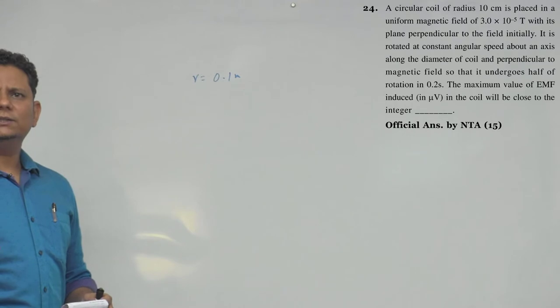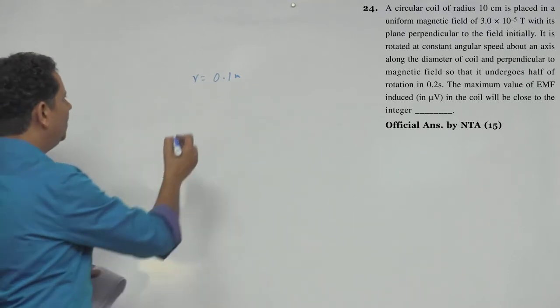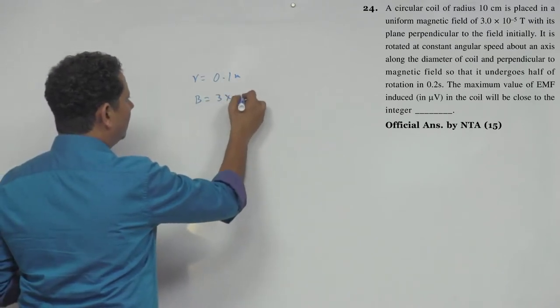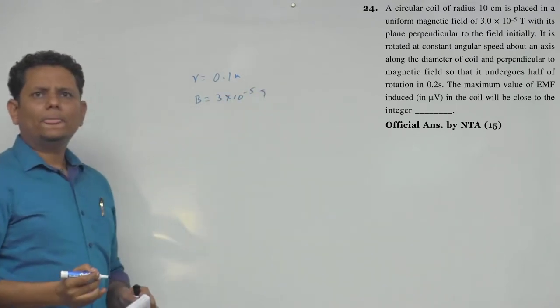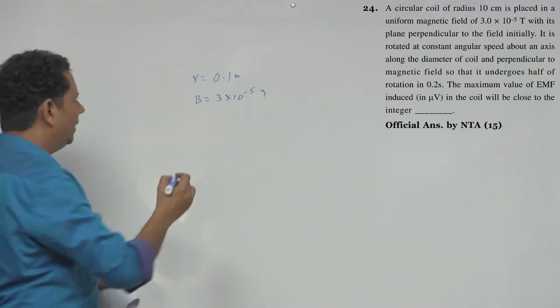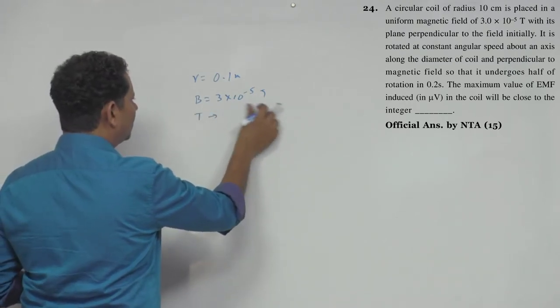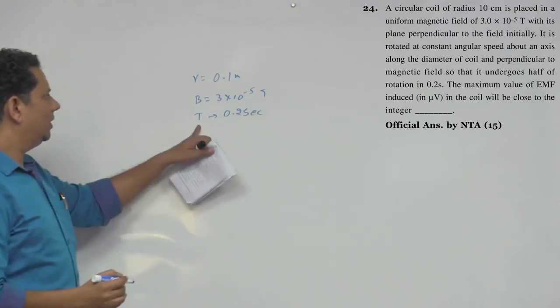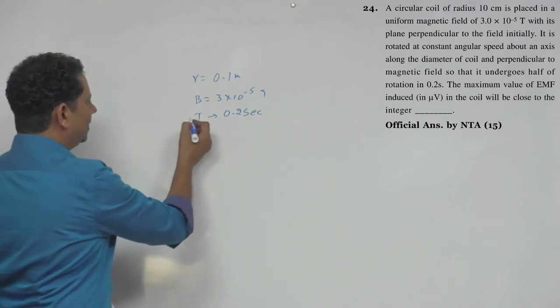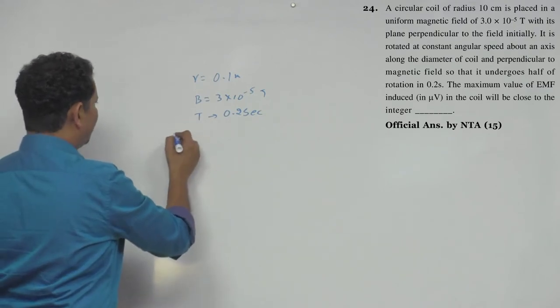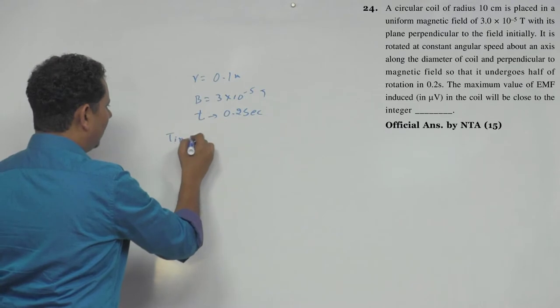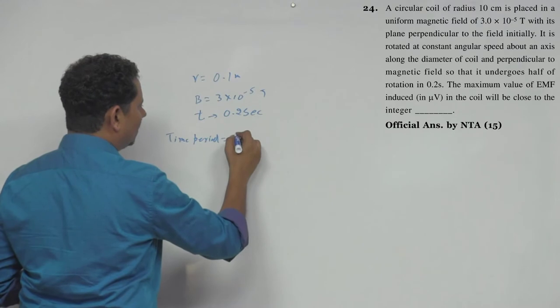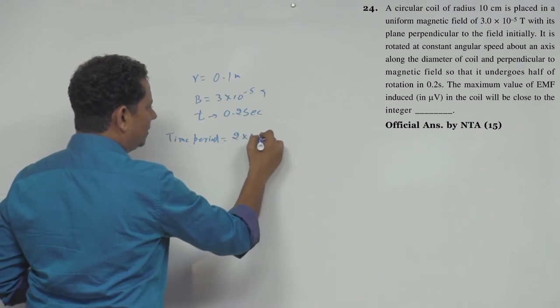Zero point 1 meter, and B is 3 into 10 to the power minus 5 Tesla. The time given is 0.2 seconds. Now notice that 0.2 seconds is the time for half rotation. So if we talk about time period, the time period will be 2 multiplied by 0.2 seconds, that will be equal to 0.4 seconds.